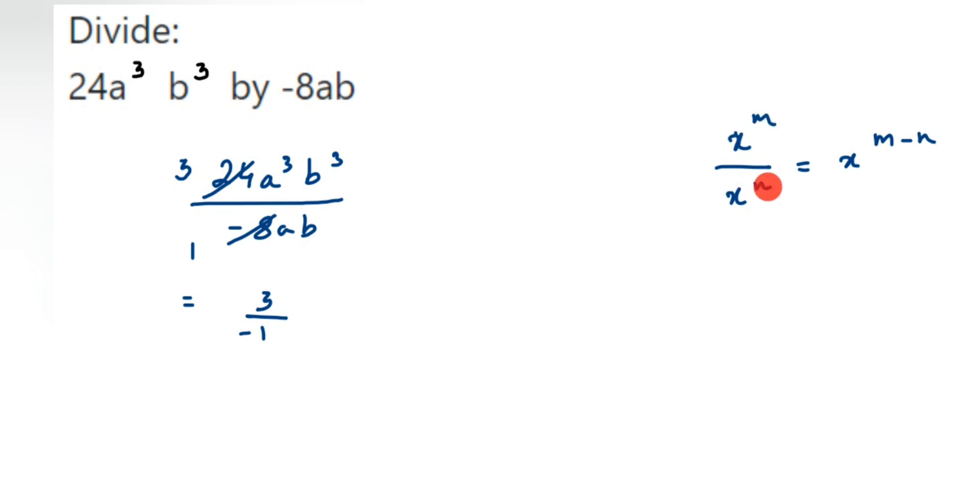Same thing here: it will become a^(3-1) multiplied by b^(3-1). There's no power here for a and b, which means the power equals 1. So this equals -3 times a² times b². So this equals -3a²b².